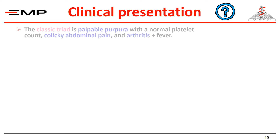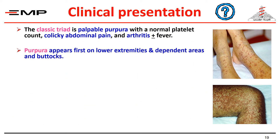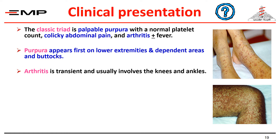The classic presentation of Henoch-Schönlein Purpura is a triad of palpable purpuric eruptions with a normal platelet count — distinguishing it from thrombocytopenic purpura — colicky abdominal pain, and arthritis, possibly with fever. The purpuric eruptions are raised and palpable, typically appearing first on the lower extremities and dependent areas. The arthritis is transient and usually involves the knees and ankles.